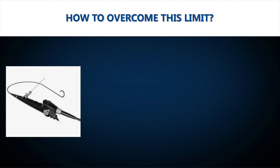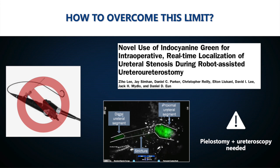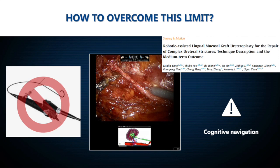Among the alternative strategies, ICG endoluminal injection has been proposed as an intraoperative aid to identify the stenosis borders, but it requires a nephrostomy on site as well as intraoperative ureteroscopy. 3D virtual models have also been used as a guide to locate the stricture in a cognitive way intraoperatively.